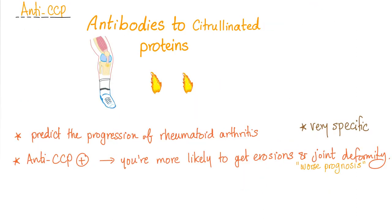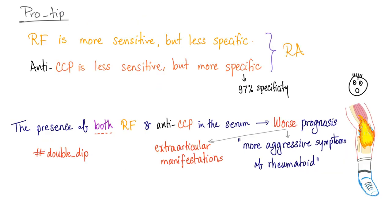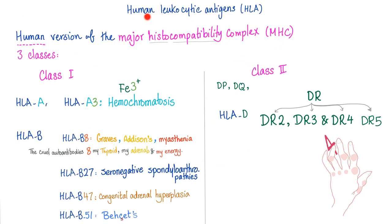The rheumatoid factor is more sensitive; anti-CCP (antibodies against citrullinated proteins) is more specific. When both are positive together: bad news — worse prognosis, more aggressive symptoms, more extra-articular manifestations. The HLA association in rheumatoid arthritis is HLA-DR4.